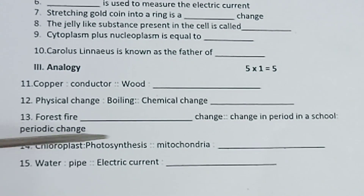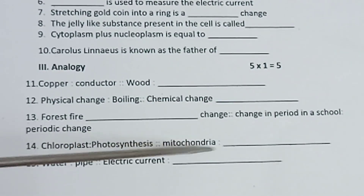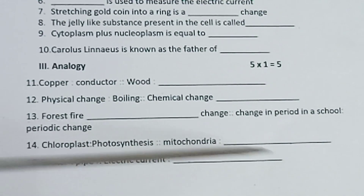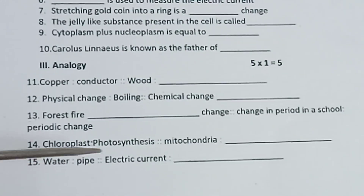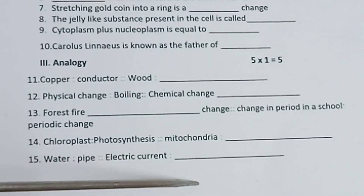Fourteenth one: Chloroplast — photosynthesis; mitochondria — dash. Fifteenth one: Water — pipe; electric current — dash.